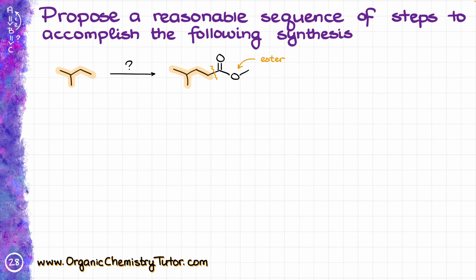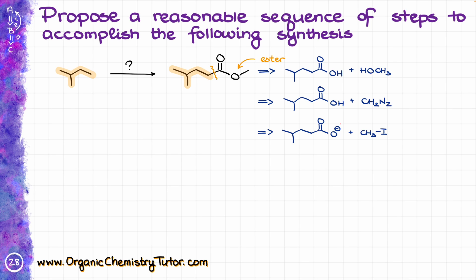Starting my retrosynthetic analysis here, I'm going to deal with the ester right away. There are many ways to synthesize that ester — we can use Fischer esterification, starting with the carboxylic acid and the corresponding alcohol, or form a methyl ether using diazomethane and the corresponding acid, or do an SN2 reaction in which the carboxylate attacks the CH3 of methyl iodide, displacing the iodine to give the ester. Since we are finishing up the first semester of organic chemistry, I'm going to go with the SN2 method.